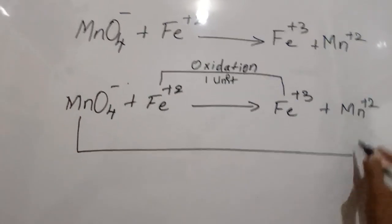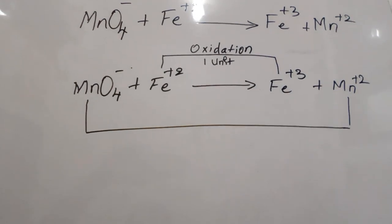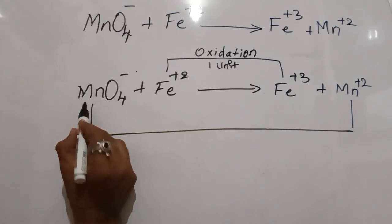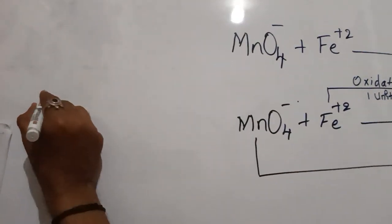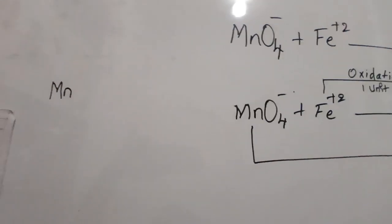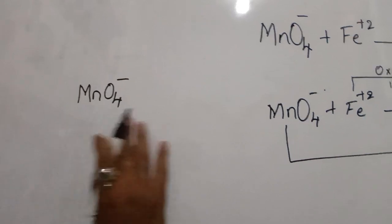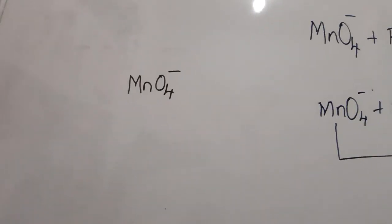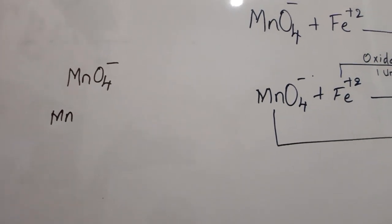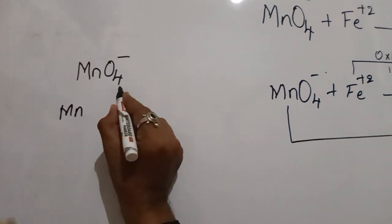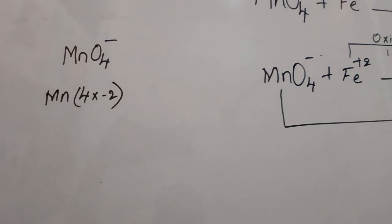The oxidation state of manganese is what we need to find. For MnO4 minus, to calculate the oxidation number of manganese: the oxidation number of oxygen is minus 2, and there are 4 oxygen atoms. Each oxygen atom has minus 2 charges. The overall ion has a minus 1 charge.